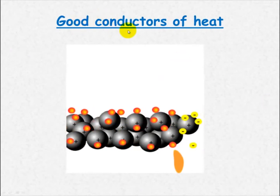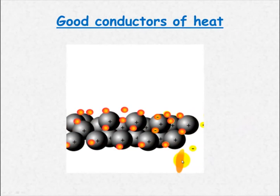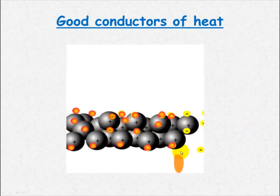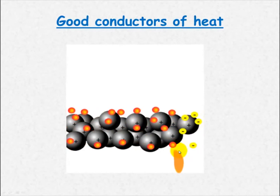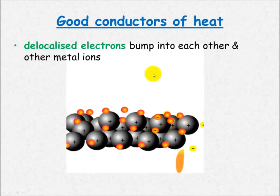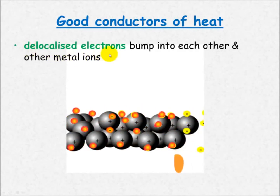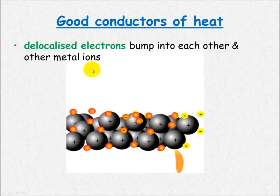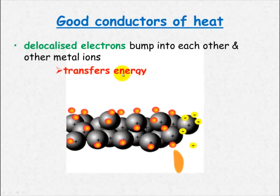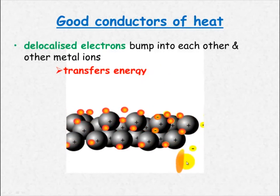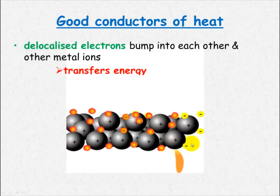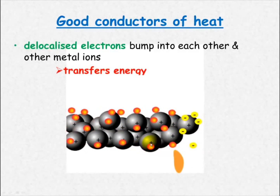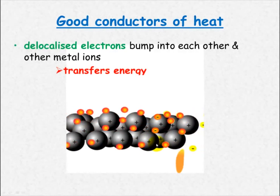Metals are also good conductors of heat. If we apply some heat energy, the electrons will bump into the cations and also bump into other electrons, transferring that energy across. The delocalized electrons carry that energy and bump into other metal ions, which transfers the energy. Remember that heat is just energy — if one of these electrons gains energy, it will move faster and pass some of that energy to the next cation or the next electron, making that one move faster too.